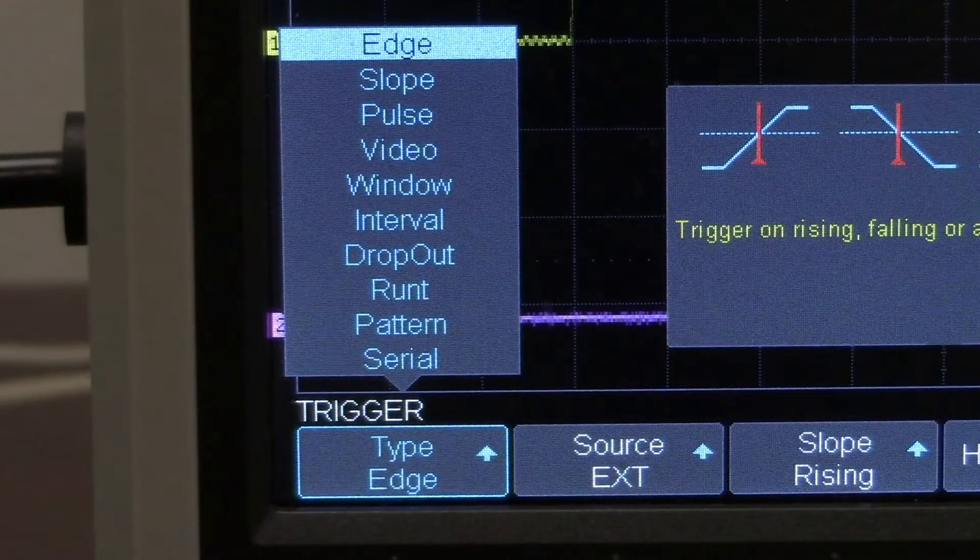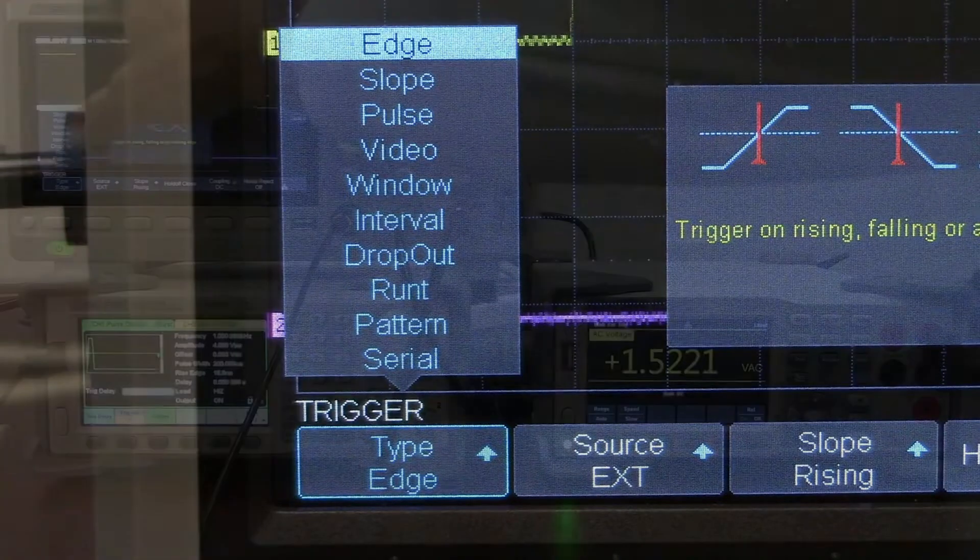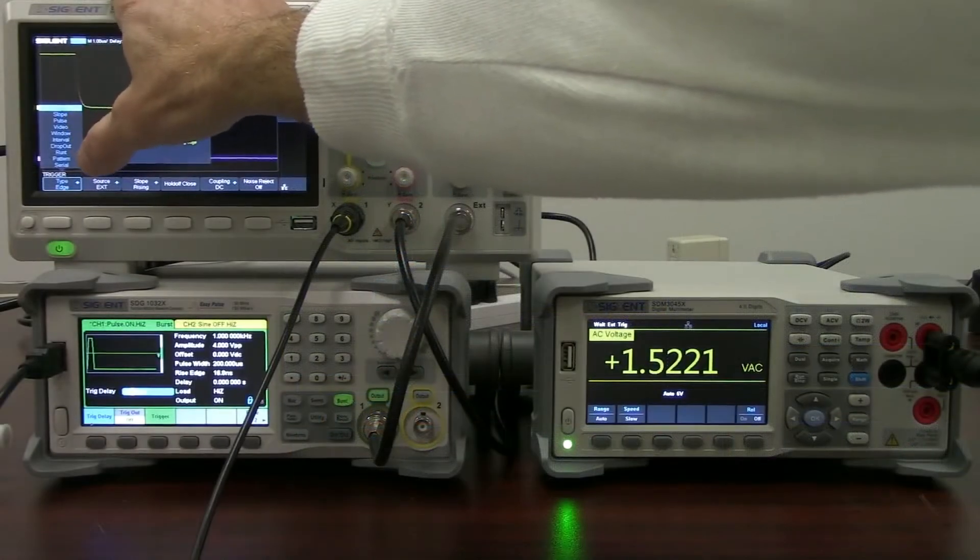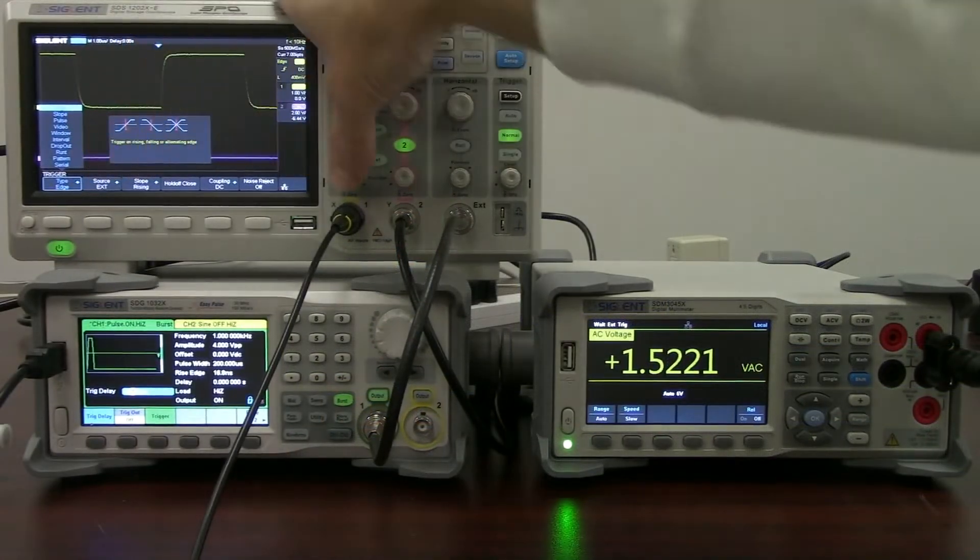So I'm going to go set up trigger, take a look at edge, slope, pulse, video, window. So it has all of the normal trigger types that a normal oscilloscope channel has.